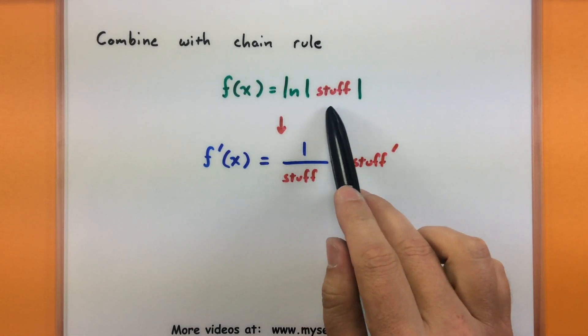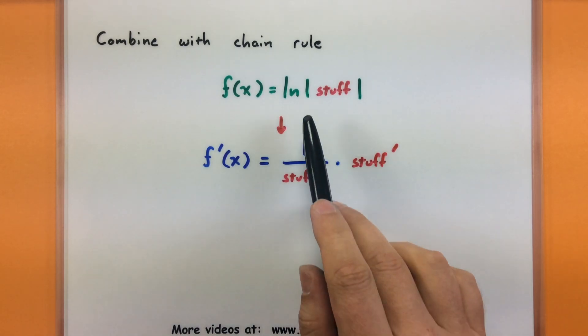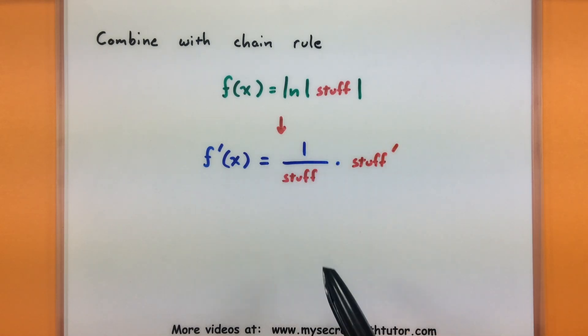So if you do come across something like the natural log of stuff, the absolute value of stuff, then what you'll do is you'll first take the derivative of the outside that's using our chain rule, leave the inside the same, and then multiply by the derivative of that inside. So let's do one quick example to see how something like that might work.